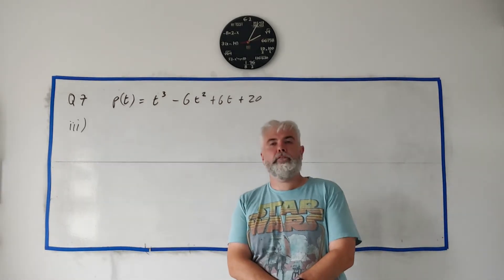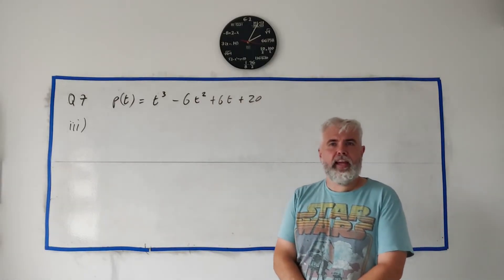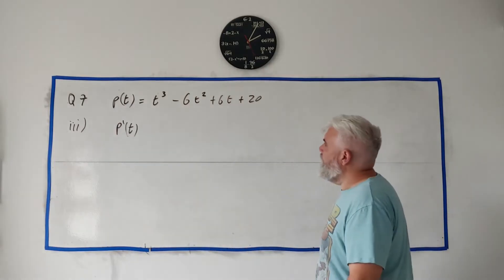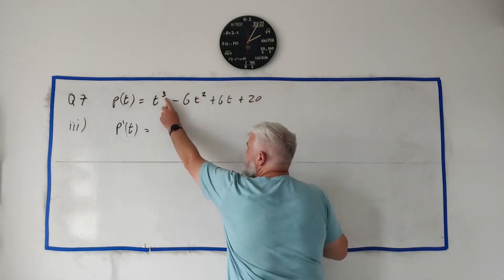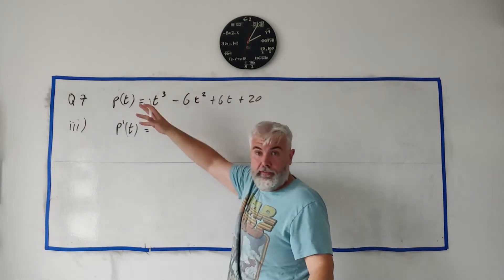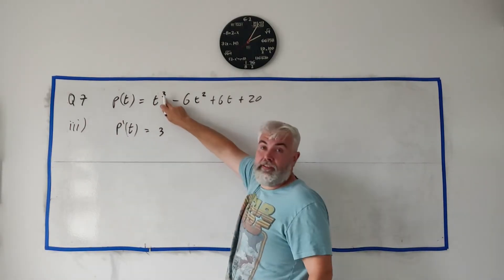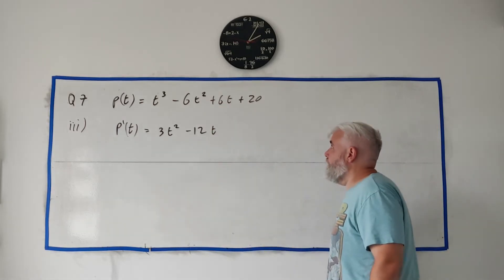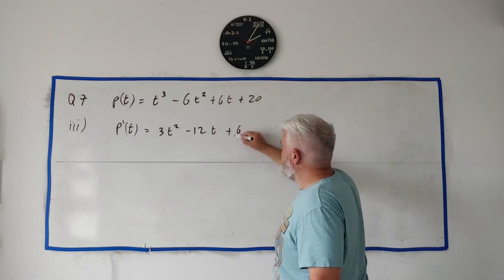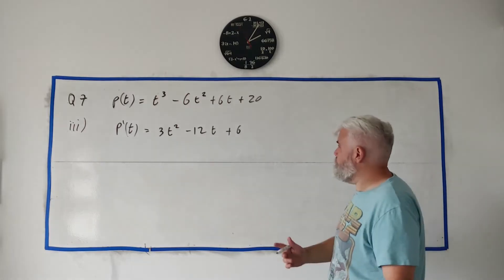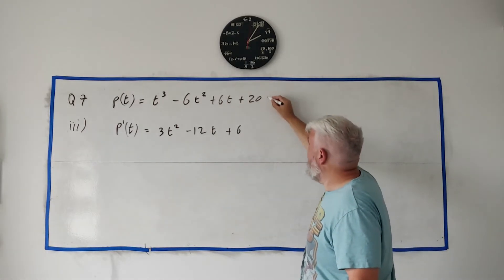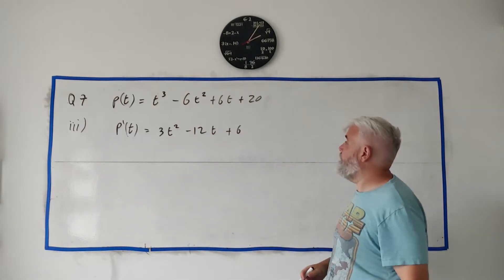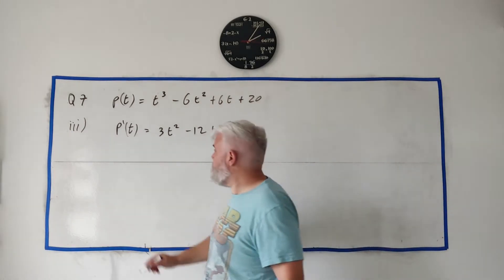For part three we return to just the equation here, and they ask us to find the derivative, p'(t). So how do we get the derivative? It's just a rule we follow. We take the power and multiply it by the number in front: 3 times 1 is 3, we then take one away from this power so we get 3t². Do the same here: 2 times minus 6 is minus 12, take one away from that, it's t to the power of 1. Same here: 1 times 6 is 6, take one away from that, it's t to the power of 0. Anything to the power of 0 is just 1. Most students just remember that constants just become zero when differentiated, they disappear. So that's the answer to part three.